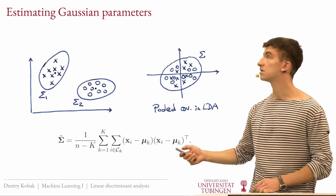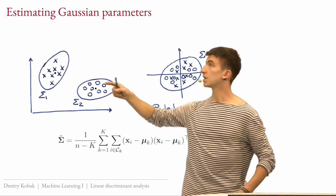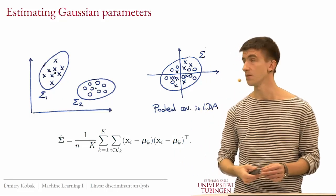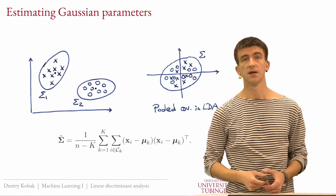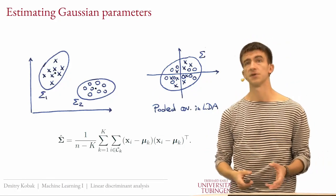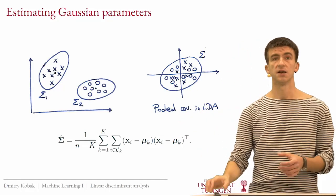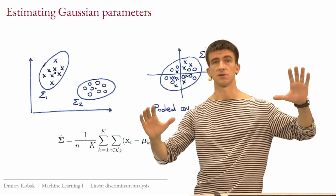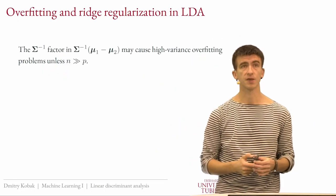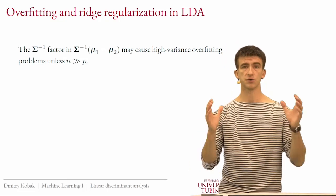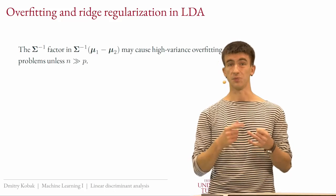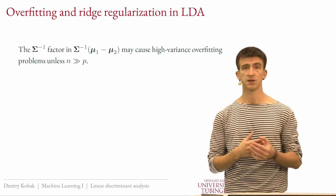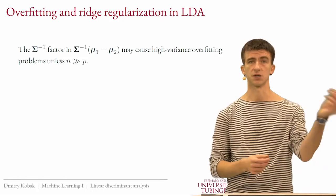You can always compute this pooled sigma in principle — even if the true covariances are very different — and it will be the best single covariance matrix that fits both classes in your training data. With estimates for μ_1, μ_2, Σ, and the priors, you plug them into the decision boundary formula to get the class probability or binary prediction for any test point x.